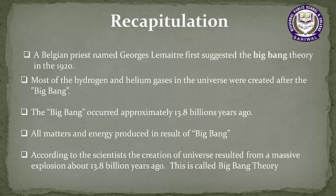The answer is: a Belgian priest named Georges Lemaître first suggested the Big Bang Theory in 1920, when he theorized that the Universe began from a single primordial item. Next question: which gases were produced or created in the Universe? Hydrogen and helium gases were produced in the Universe first of all.